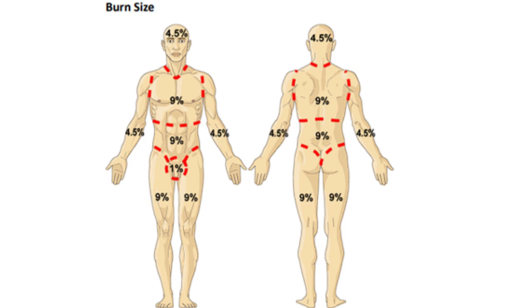For burn size, I personally like to use the rule of nines, which is normally used most frequently. As you can see here, it shows the rule of nines — the front of each leg is nine percent, the back of each leg is nine percent. You calculate the percentage of body involvement. If it's front and back of a whole arm, you add 4.5 plus 4.5. If it's just the front of the whole arm, then it's just 4.5.